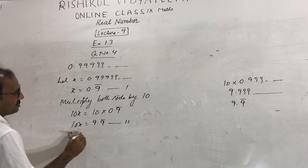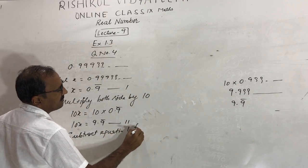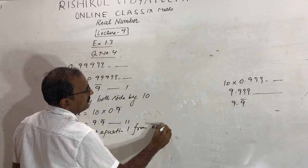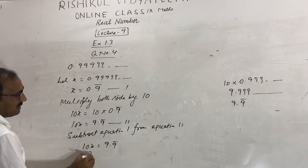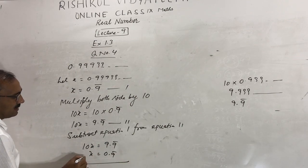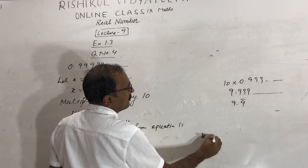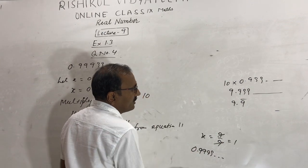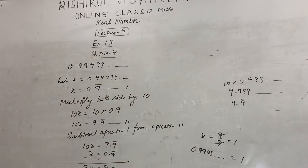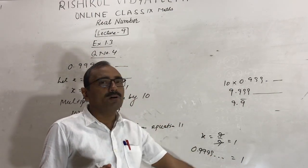Therefore x equals 9 upon 9, which equals 1. So 0.9999... up to so on equals 1. Because 0.999... is very, very, very near to 1, it is equal to 1.